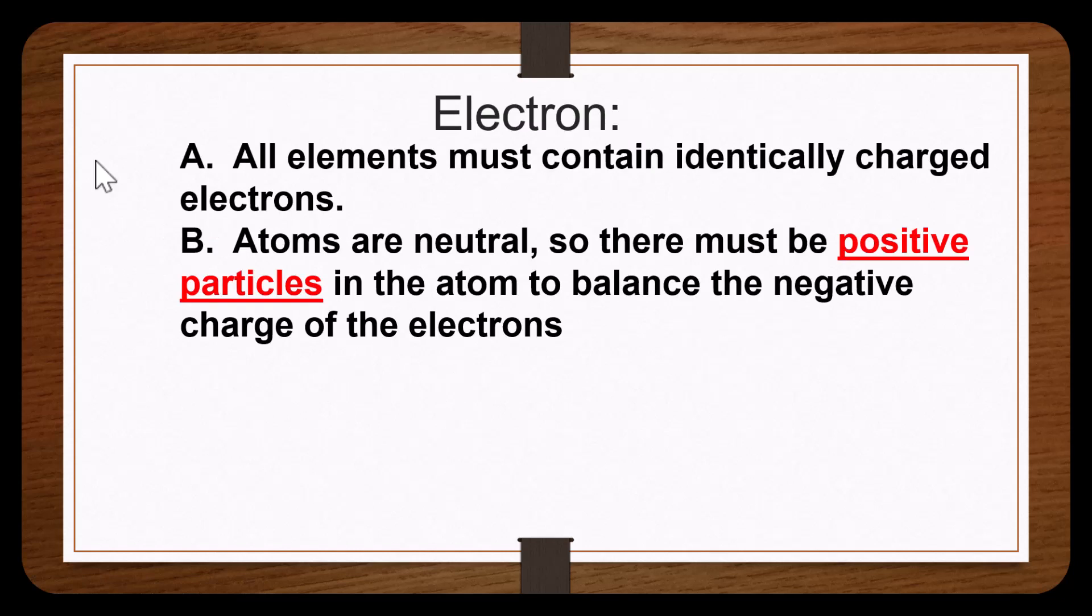All elements must contain identically charged electrons. We know this from the cathode experiment from J.J. Thompson in the late 19th century.